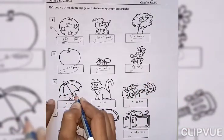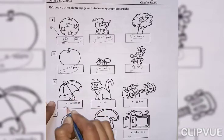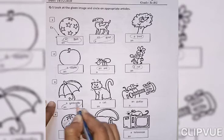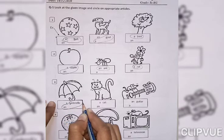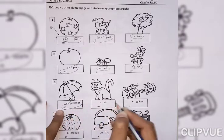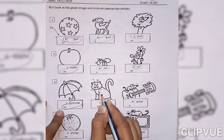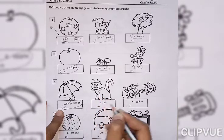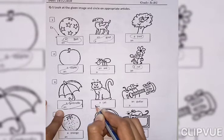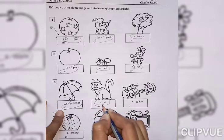What is this? Umbrella. So, U is vowel. That's why which article will come here? An article. What is this? Cat. C is consonant, so article A will become.